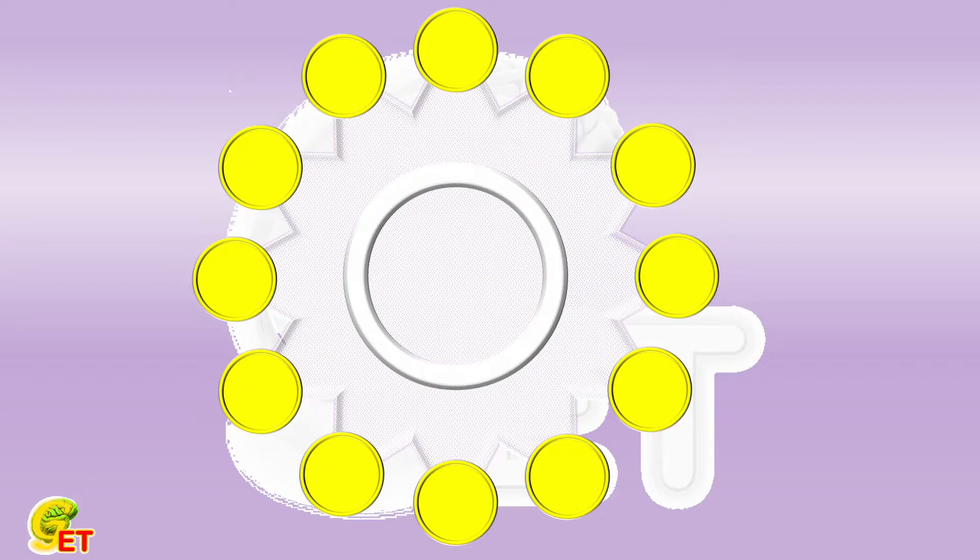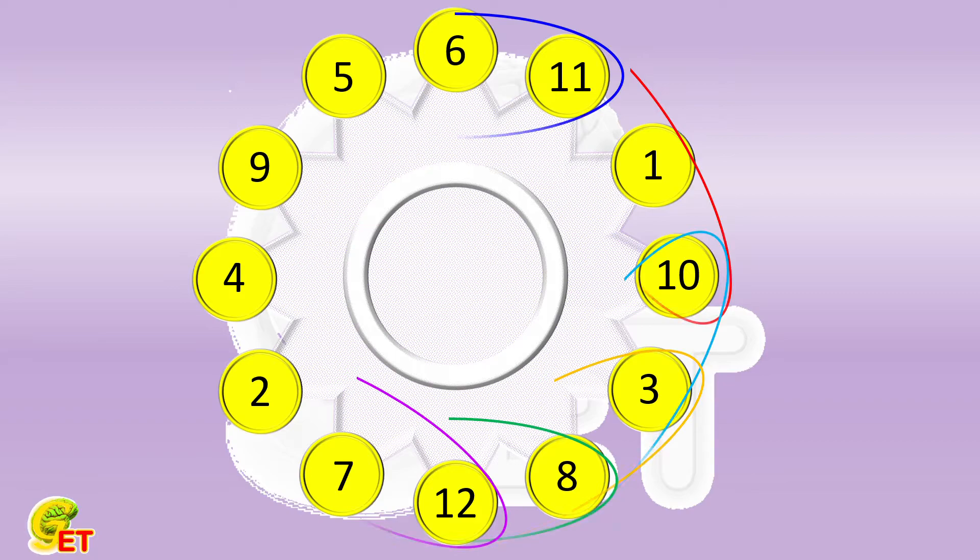We arrange 12 plates in a circle and put the 12 numbers from 1 to 12 on the plates randomly. If we calculate the summation of every 3 consecutive numbers, we will find that sometimes they will be bigger than 20.